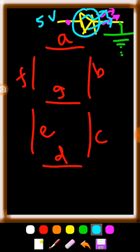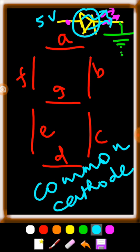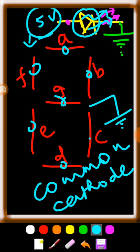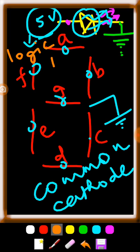This is called a common cathode connection. In common cathode, the cathodes of all the LEDs in all segments are connected to ground. If logic 1 (5 volts) is given to the anode, the light glows. If logic 0 is given to the anode, the light is switched off. Based on this, we are going to design our circuit.